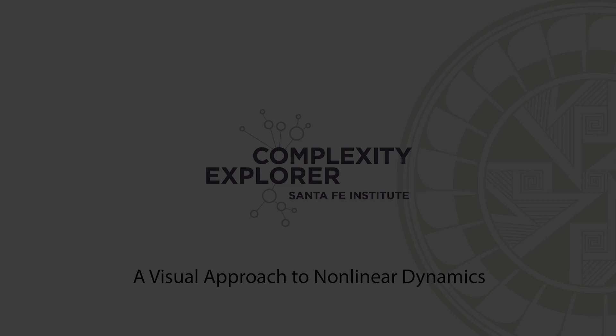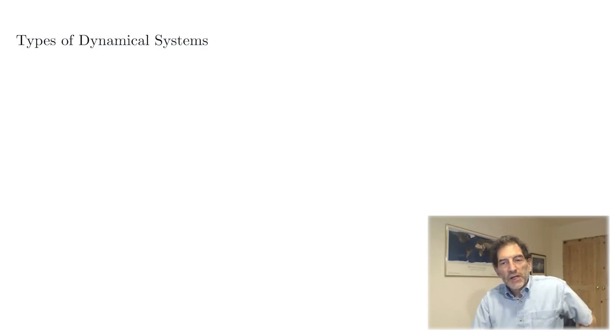Having defined a dynamical system, let's now categorize the different types of dynamical systems that can exist. Dynamical systems come in two basic flavors. They can either be linear or nonlinear.